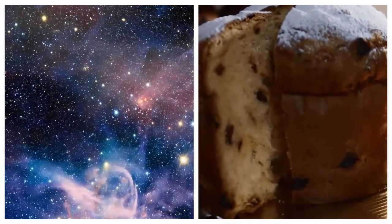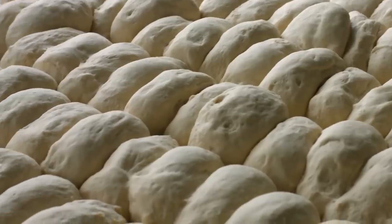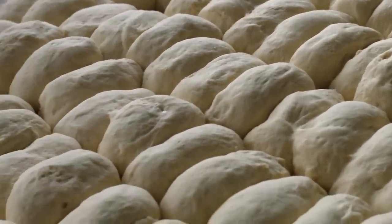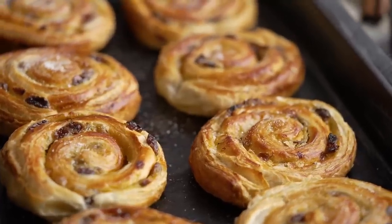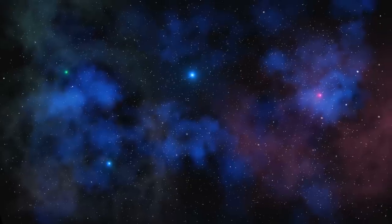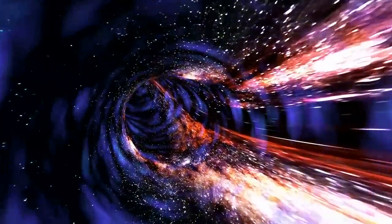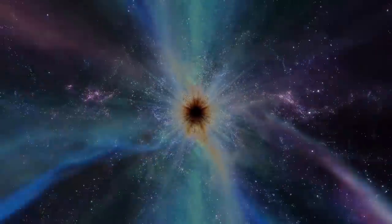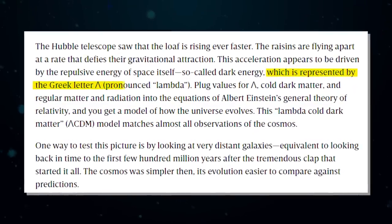Think of the universe as a loaf of raisin bread. It starts as a mixture of flour, water, yeast, and raisins. When you combine these ingredients, the yeast begins respiring, and the loaf begins to rise. The raisins within it, stand-ins for galaxies, stretch further apart from one another as the loaf expands. The Hubble telescope saw that the loaf is rising ever faster. The raisins are flying apart at a rate that defies their gravitational attraction. This acceleration appears to be driven by the repulsive energy of space itself, so-called dark energy, which is represented by the Greek letter lambda.